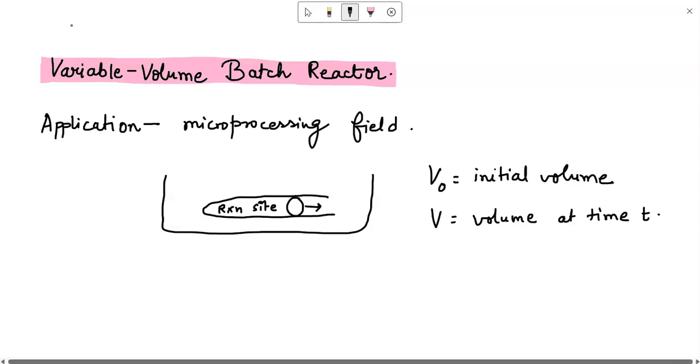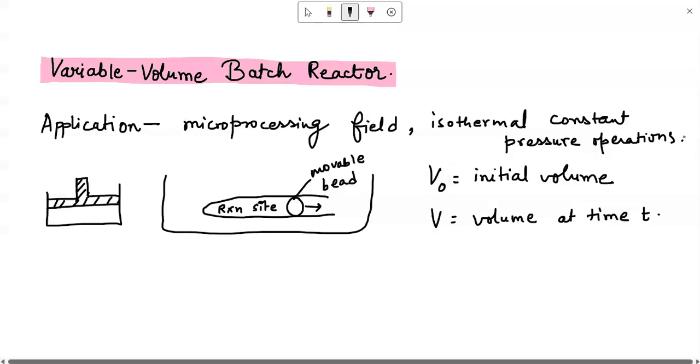Considering that these kind of reactors are more common for applications where we have to maintain a constant pressure. Just imagine a standard piston system that you study in thermodynamics. The work of this piston is to maintain the pressure and isothermal condition of the system. Similarly, this movable ball maintains isothermal constant pressure operation.